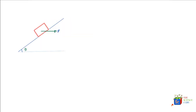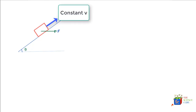The question here is that there is a mass m on an inclined plane and it is being pulled by a force F which is a horizontal force, and this force is making the mass go up the plane at a constant velocity. The question is: what is the magnitude of force F if the mass is m and the angle of inclination is theta?